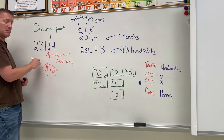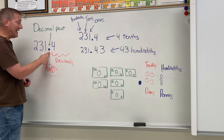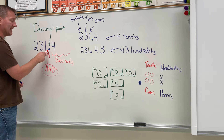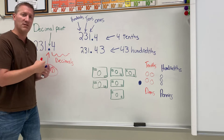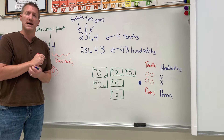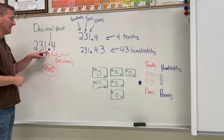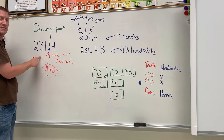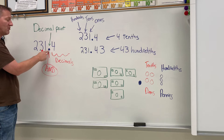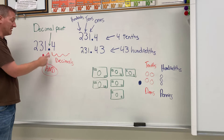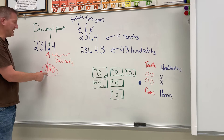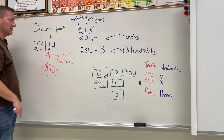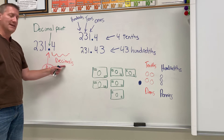So the way I would read this number is '231 and four tenths.' You're always gonna say 'and' at a decimal point. You might want to write that down in your math journal — pause the video and write this down. A decimal point is to the right of the ones place, and when you're reading it, you're gonna say it as 'and.' So '231 and four tenths' — that's how I read that number. Anything to the right of the decimal point is called decimals.